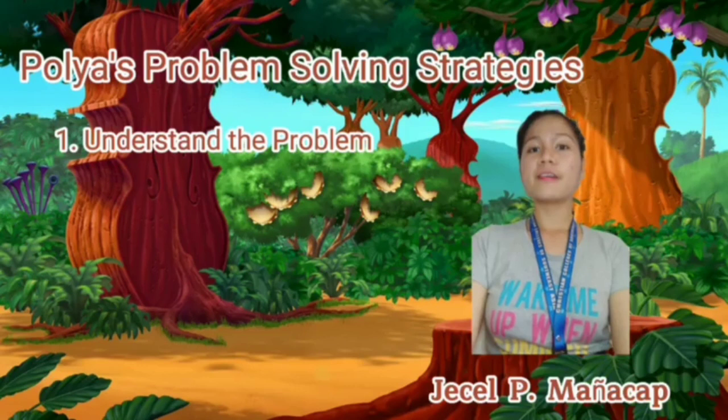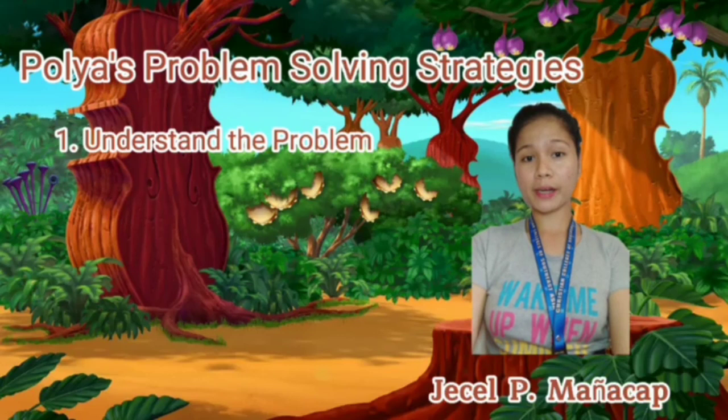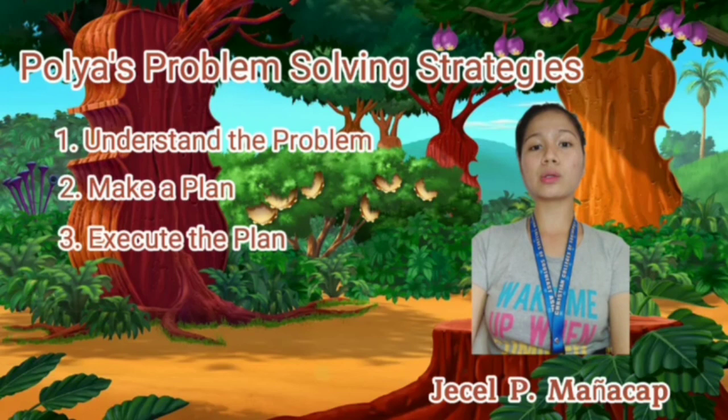The four steps of Polya's problem solving strategies are: first is understand the problem — figure out what is being asked, what is known, what is not known, and what type of answer is required.